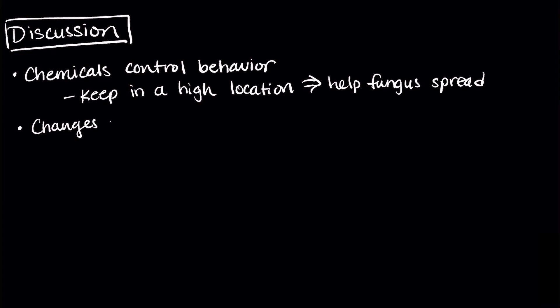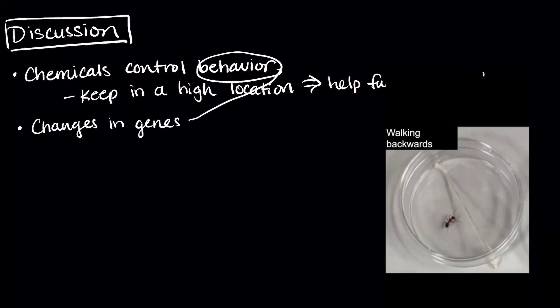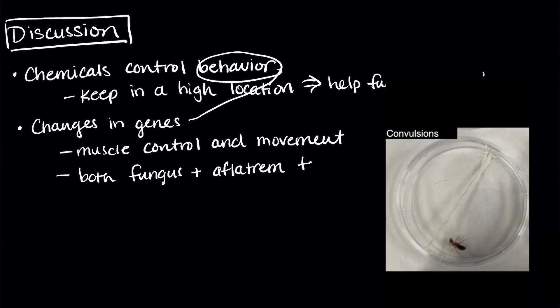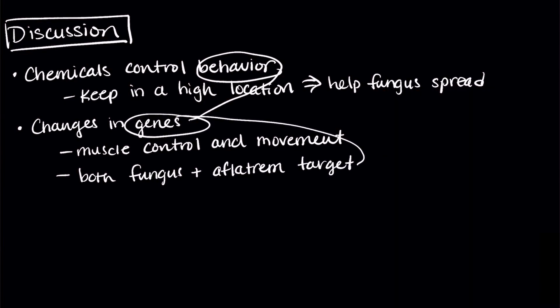The chemicals can change the genes that are responsible for muscle control and movement. This explains why the ants staggered and had a hard time walking. It seems that afflatrem and the chemicals the fungus releases both target similar pathways for functions like walking.